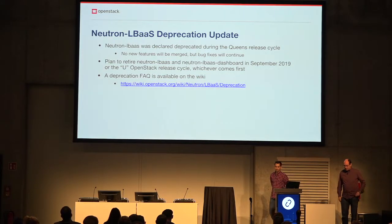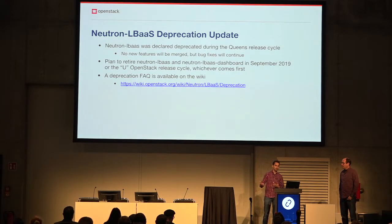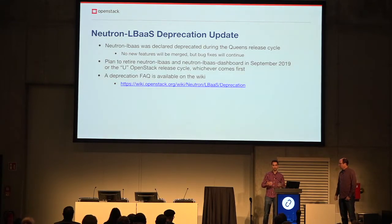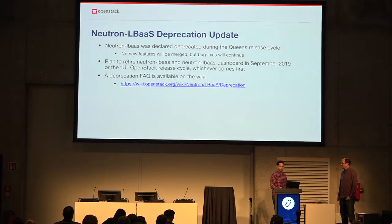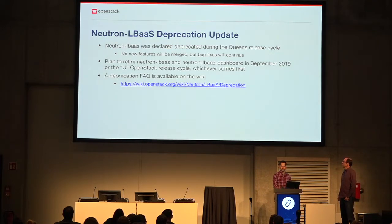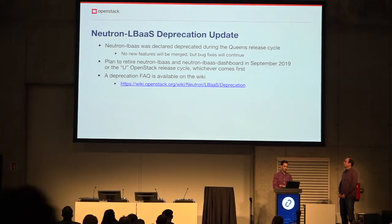One clarification: there is the project Neutron LBaaS, there is the LBaaS API, and there is Octavia. Whenever we mention Neutron LBaaS, we are talking about the project that we are deprecating and retiring soon. If we say LBaaS, we are most likely talking about the API, which is currently on v2. We also support that API in Octavia, which is why this distinction is important.